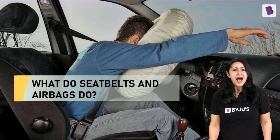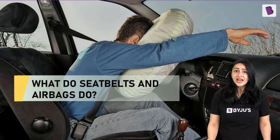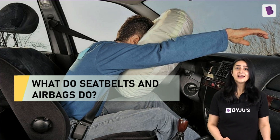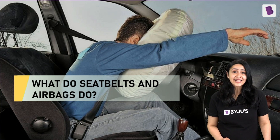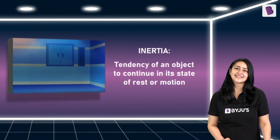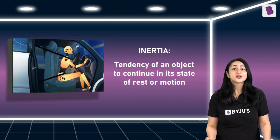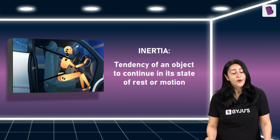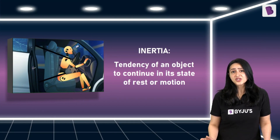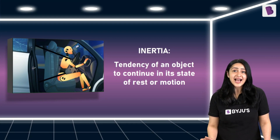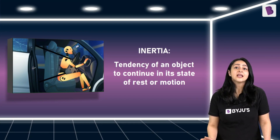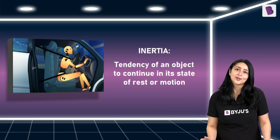But how does not wearing a seatbelt make an airbag dangerous? To answer that, let's first understand what exactly a seatbelt and an airbag do. When a car suddenly stops, the passengers fall forward. Can you tell me what causes that? Yes, it is inertia — the tendency of an object to continue in its state of rest or of motion. Since the passenger's body was moving with the car, it has a tendency to continue moving forward even when the car stops. Hence, the falling forward.